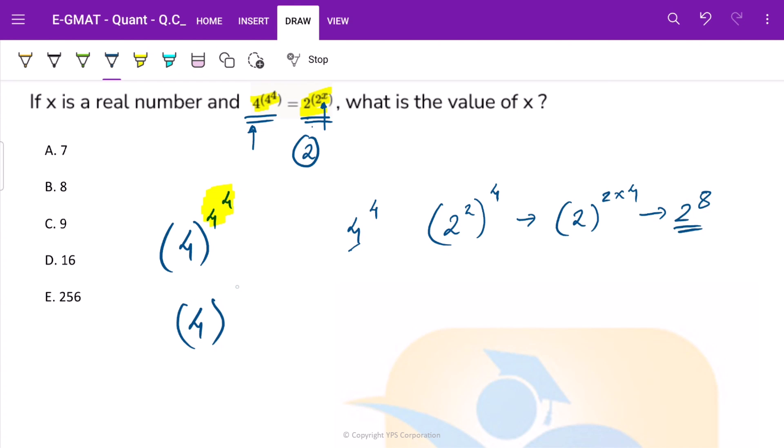Now we have 4 raised to 2 raised to 8. Again this 4 can be broken down into 2 raised to 2 into 2, whole raised to 2 raised to 8. This can be simplified further as 2 into 2 raised to 8, and this becomes 2 raised to 2 raised to 8 plus 1. This is equal to 2 raised to 2 raised to 9.